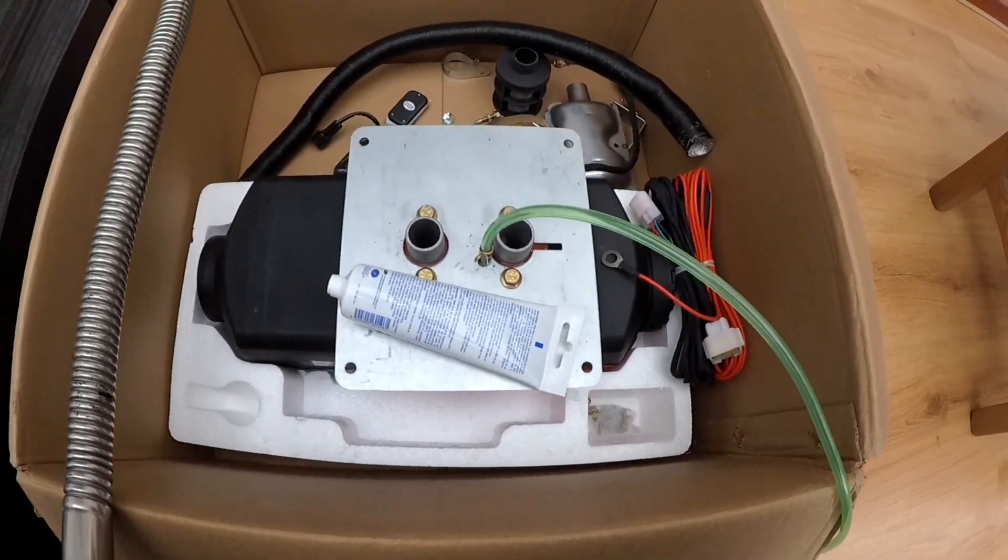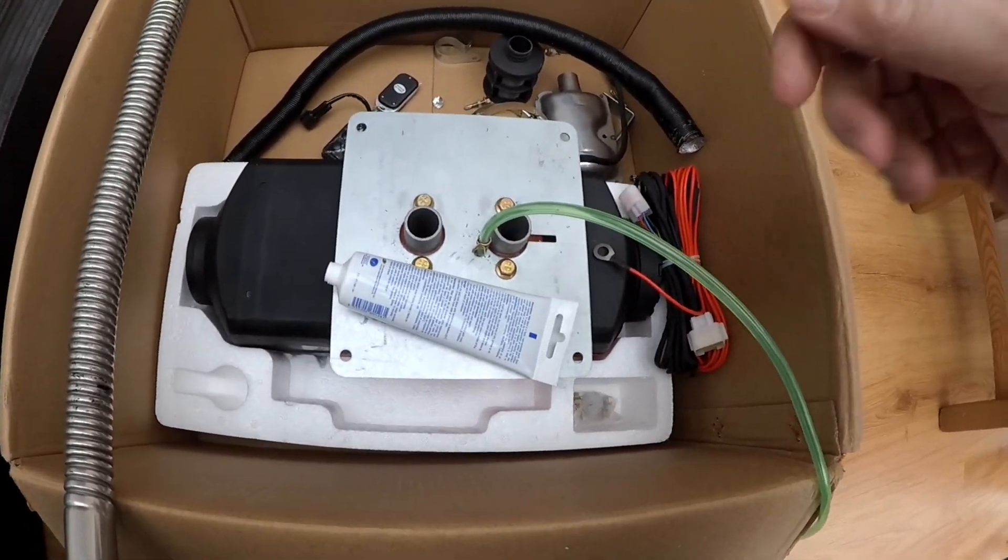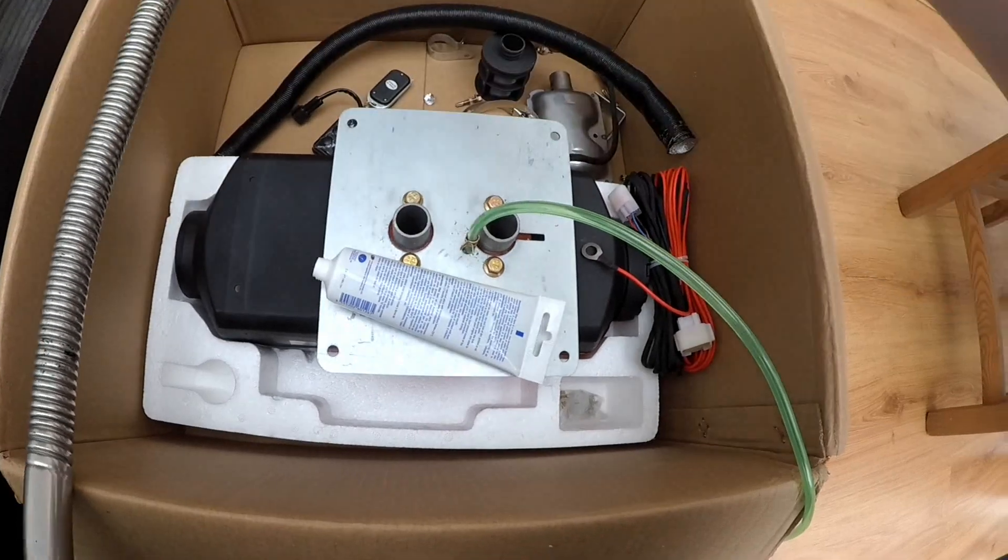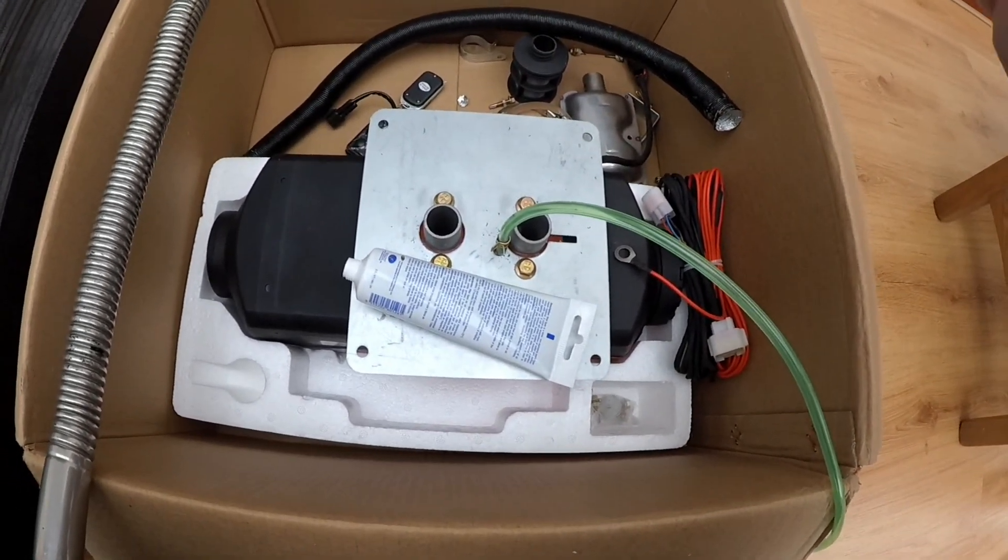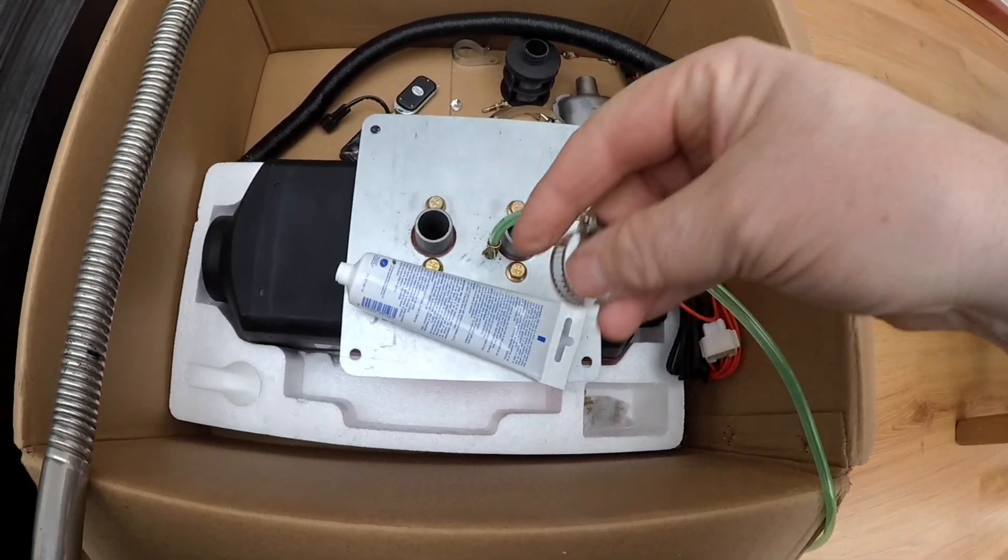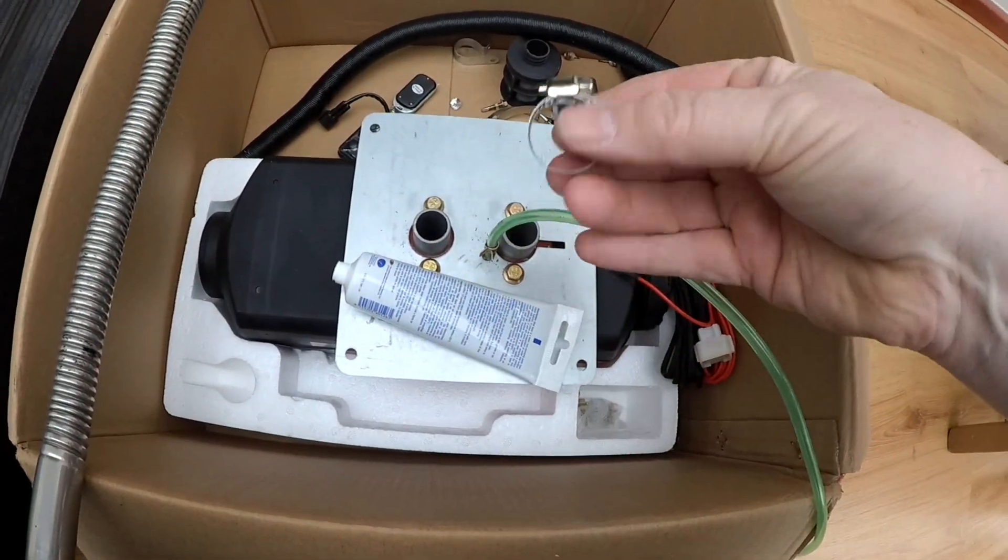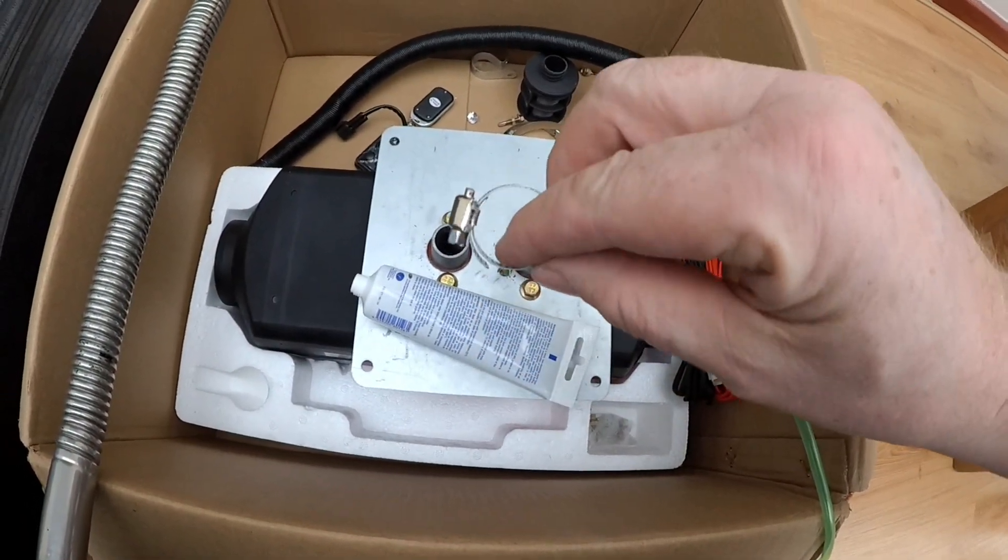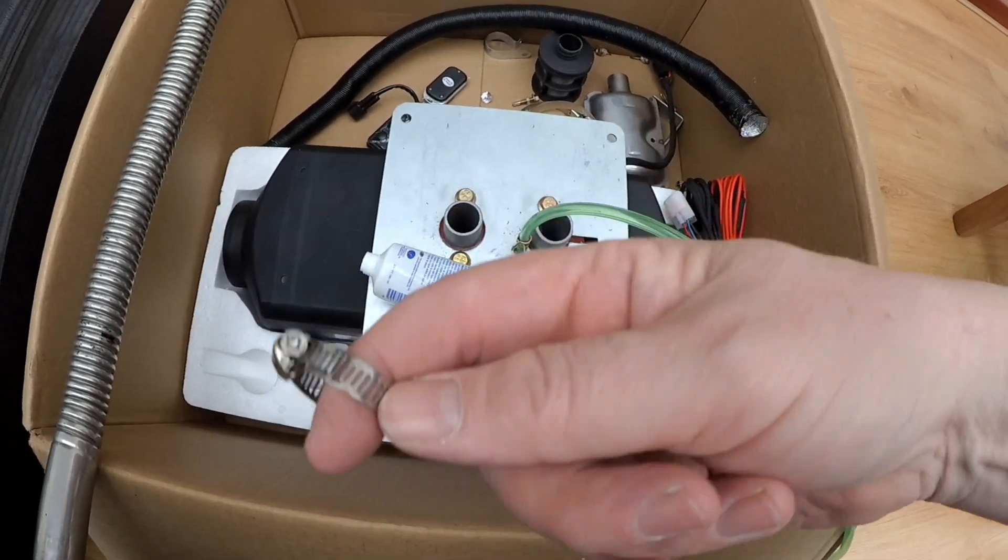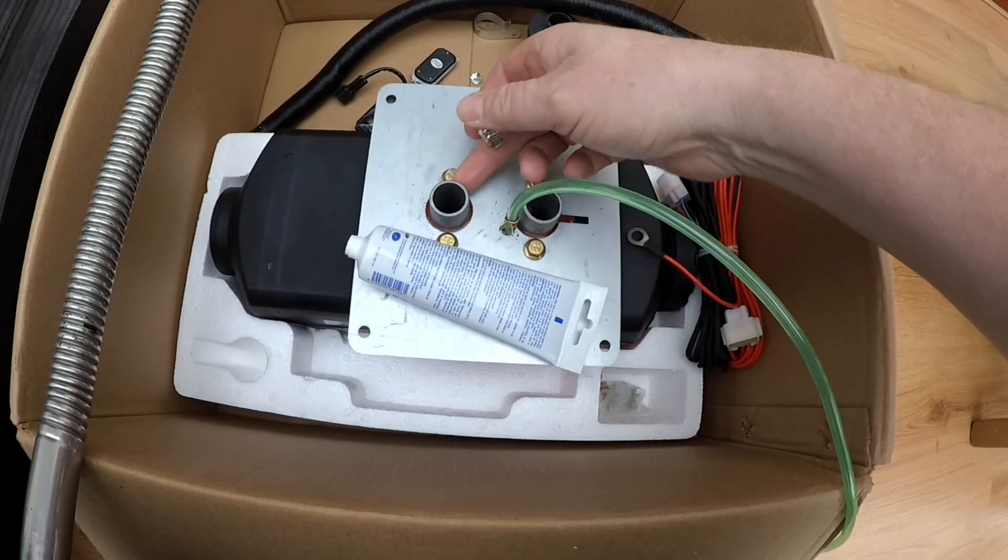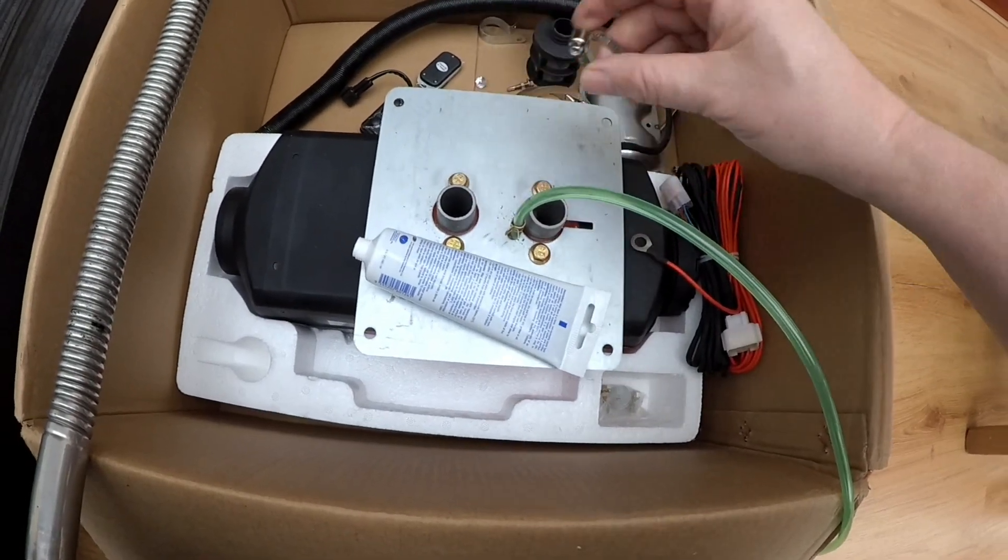I took the diesel heater back out the van just to put the exhaust pipe and the air outlet on in the house. When I was trying to do it in the van, the jubilee clips that arrived were rubbish. They weren't even tightening up. I mean, that's fumes getting back into your van from this here because of that cheap rubbish.